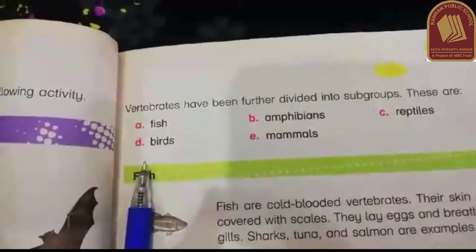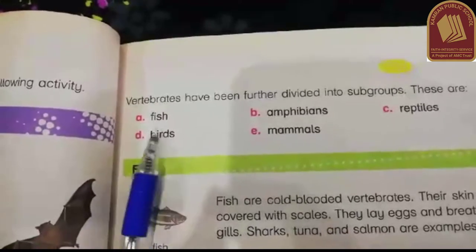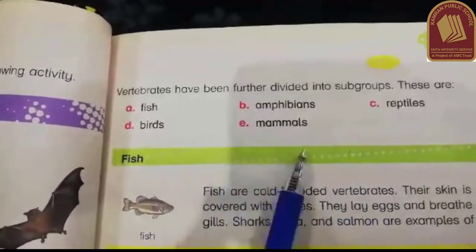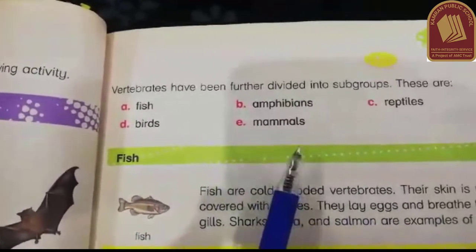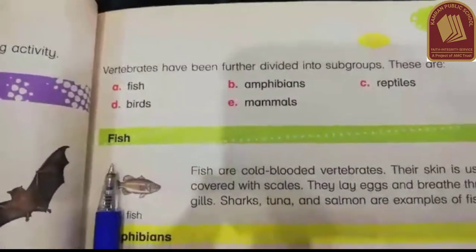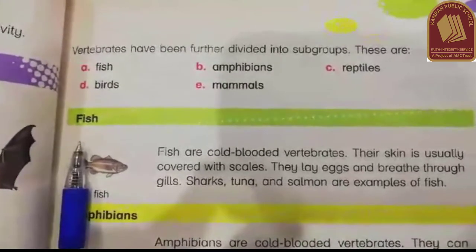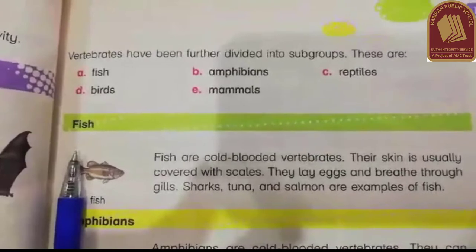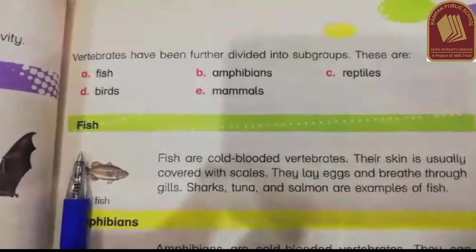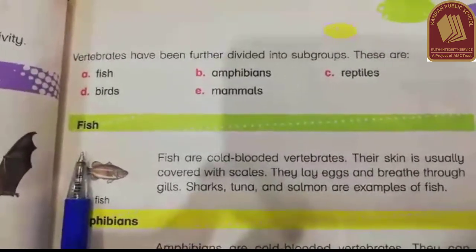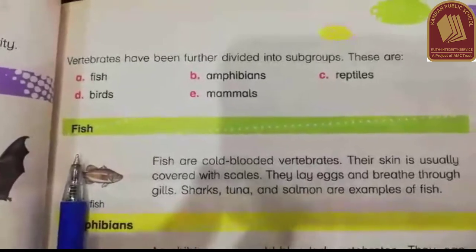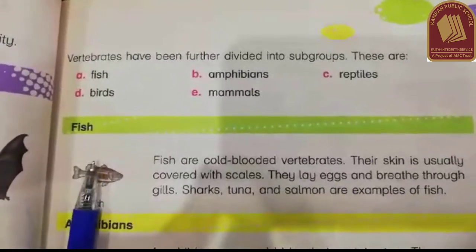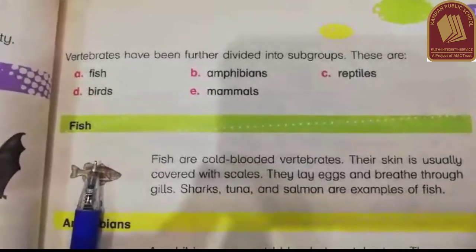The five vertebrate groups are fish, amphibians, reptiles, birds, and mammals. Fish are cold-blooded vertebrates whose body temperature changes with the environment. Their skin is covered with scales, and they breathe through gills.